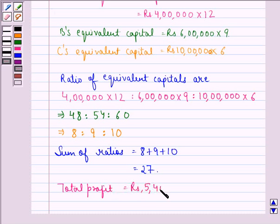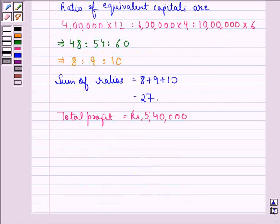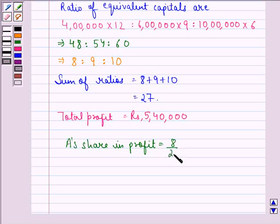So we can say that A's share in profit is equal to 8 by 27 into 5 lakh 40,000 that is equal to Rs. 1 lakh 60,000.